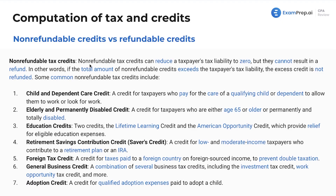Non-refundable tax credits can reduce a taxpayer's tax liability to zero, but they cannot result in a refund. For example, if you have $10,000 of non-refundable credits but only owe $2,000 of taxes, you can only take $2,000 of credits, and then carry forward those credits — it's not refunded. The rules on carrying forward depend on the specific credit. Some common ones include the child and dependent care credit, which is different from the child tax credit — that's a point of confusion worth noting.